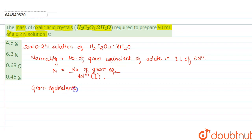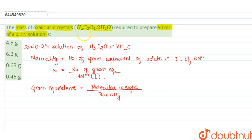Gram equivalence is equal to the molecular weight upon basicity. The molecular weight of oxalic acid crystals H₂C₂O₄·2H₂O is 126 gram per mole, and basicity is the number of replaceable hydrogen atoms, which here is 2, so basicity is equal to 2.